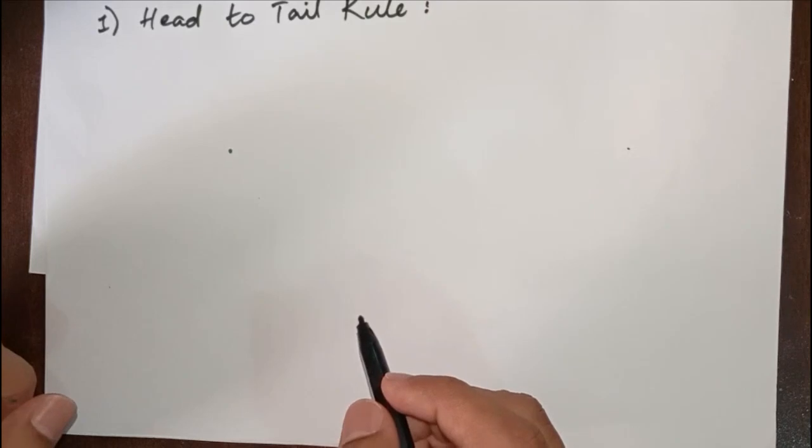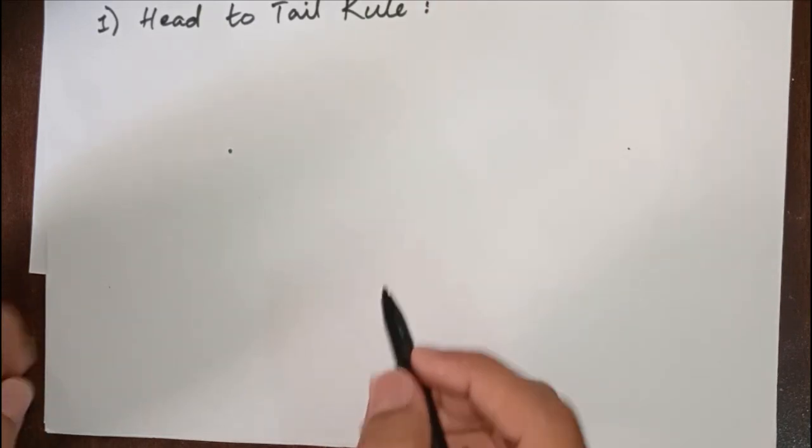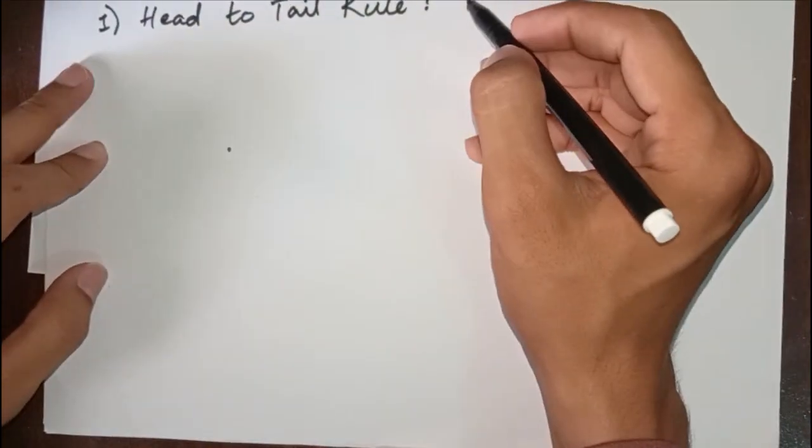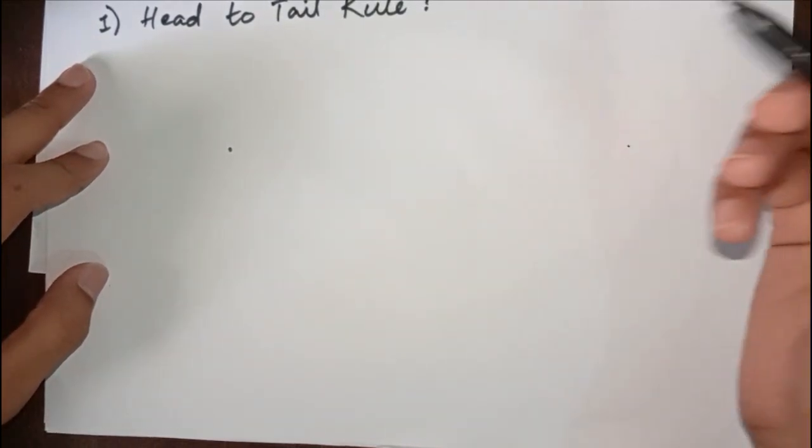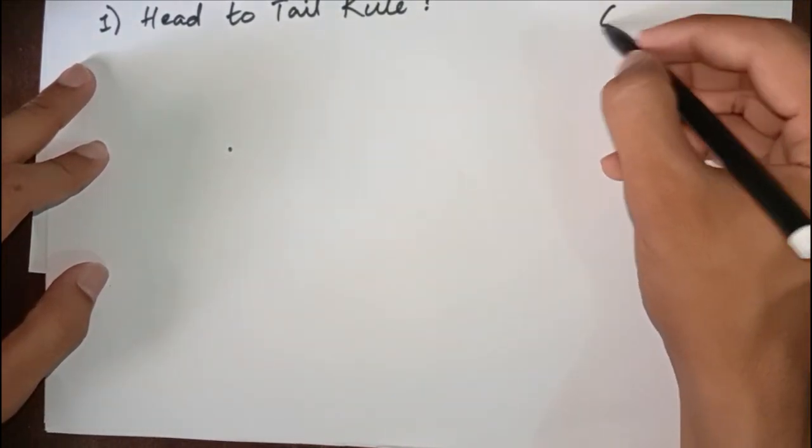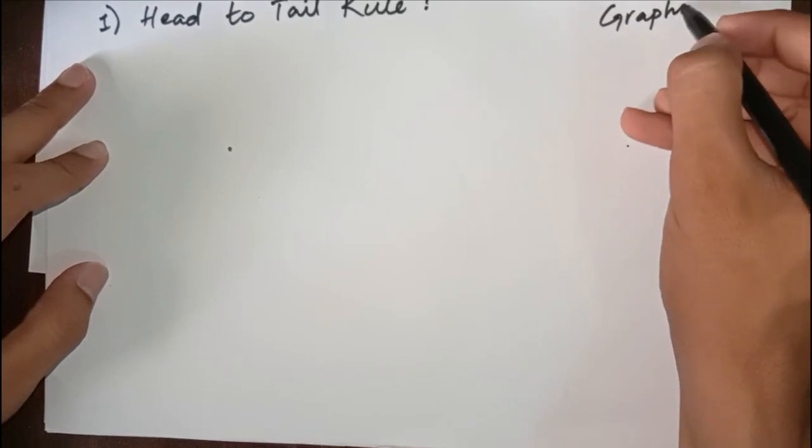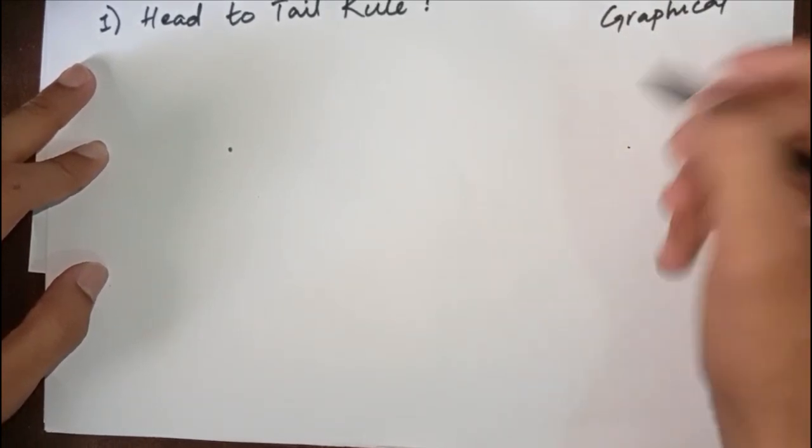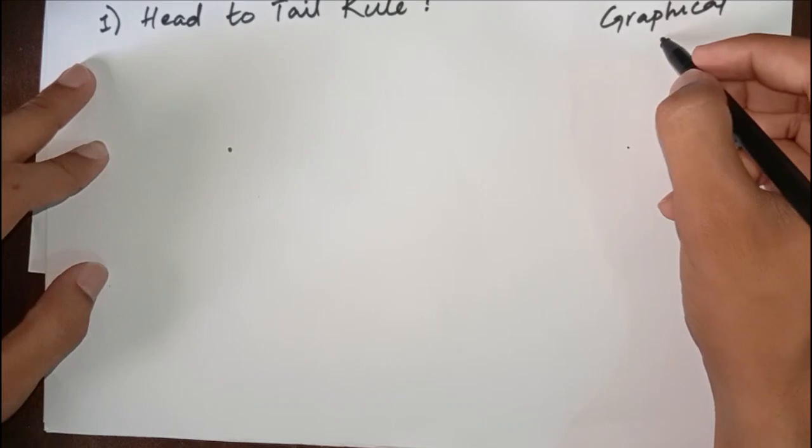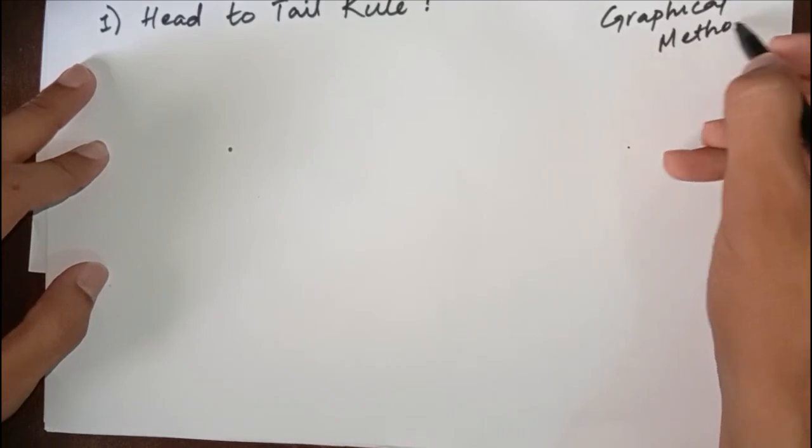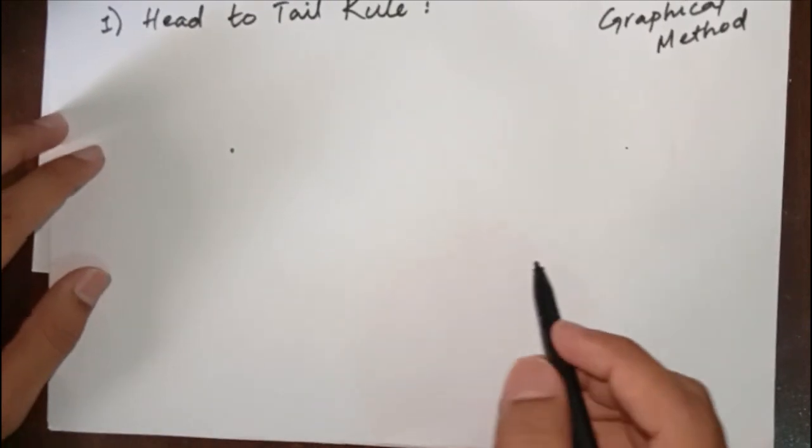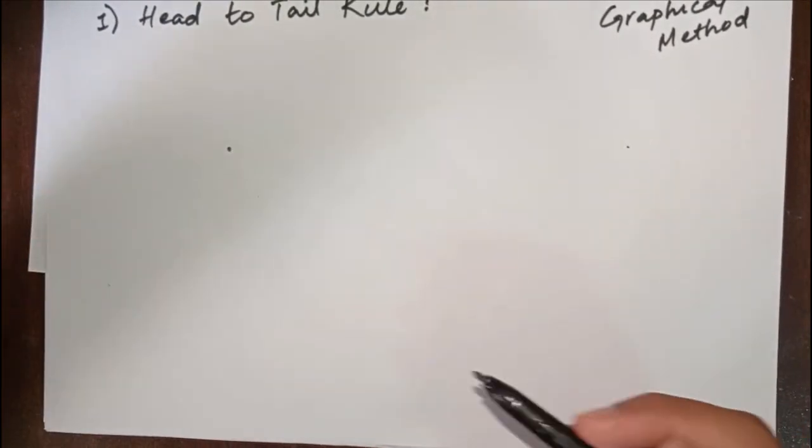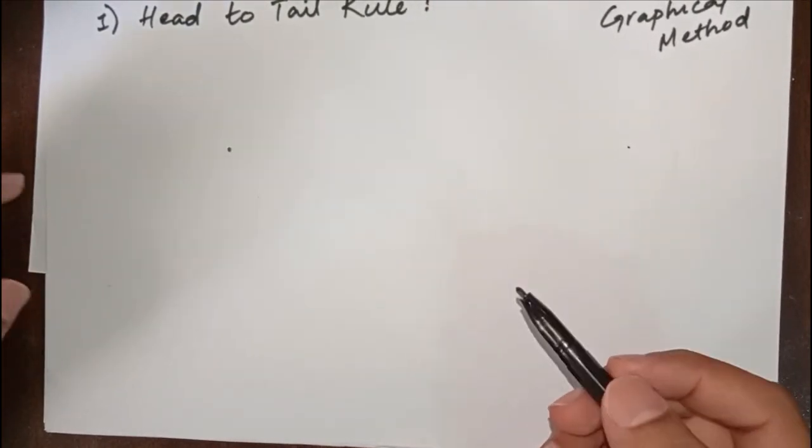Note that these two methods that we are going to discuss in this video are graphical methods. Vectors are also solved numerically, but the methods that are in our syllabus are graphical methods. So we are going to discuss head to tail rule, that is one of the graphical methods of vector addition.